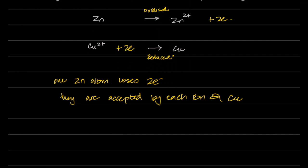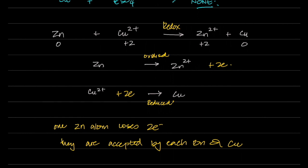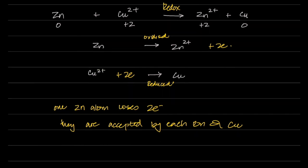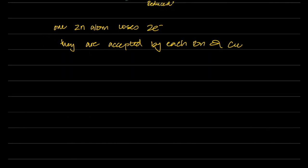What if we could actually see this electron transfer? We've seen electrons move through wires as current. The idea is to not let zinc and copper touch each other, but instead pass the electrons through a wire — so we can witness and measure the electron transfer.